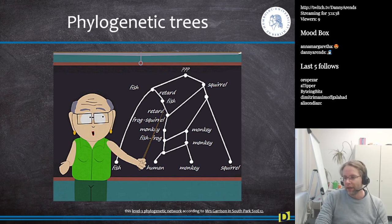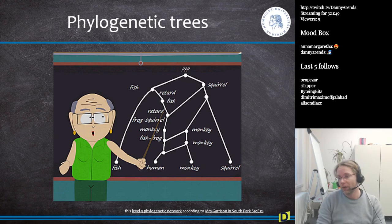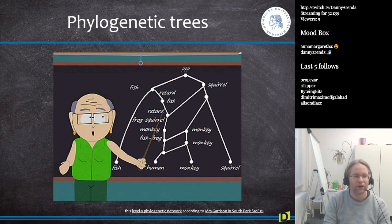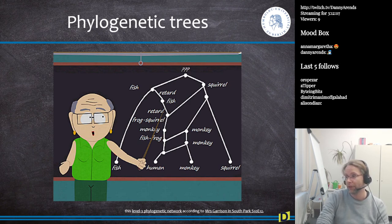We're going to take a quick break, and then we'll have another 15 to 20 minutes to finish the lecture. We'll be talking about phylogenetic trees — as Mr. Garrison explains, how a monkey, a frog, a fish, and a 'retarded fish' are related. For viewers on YouTube, the recording will stop here — see you in part four.